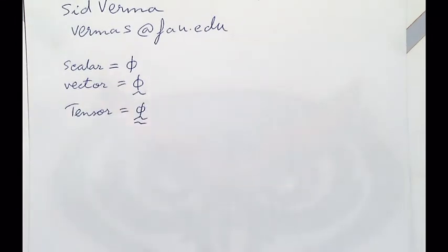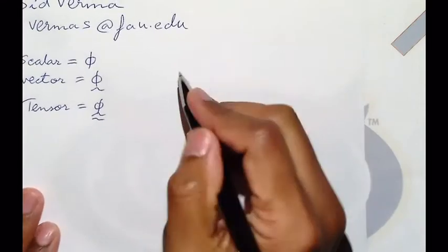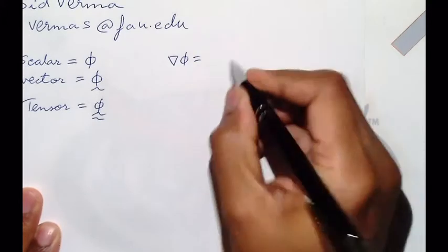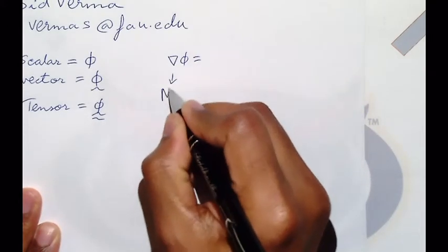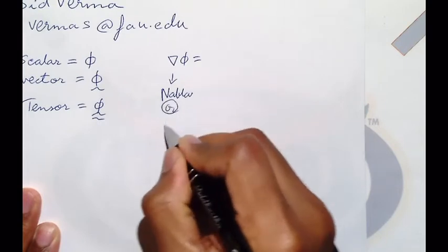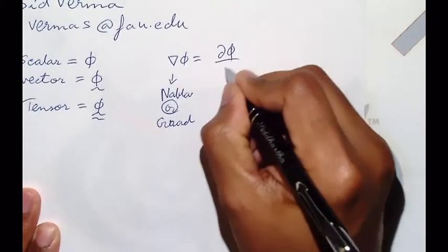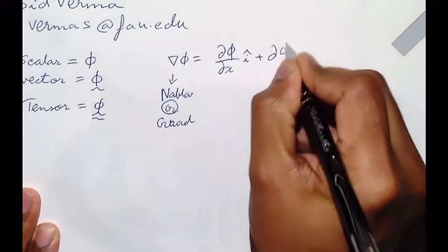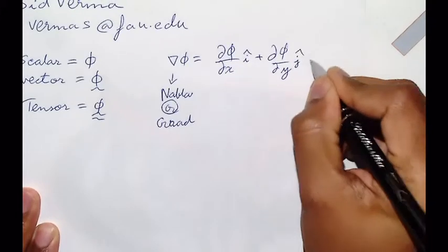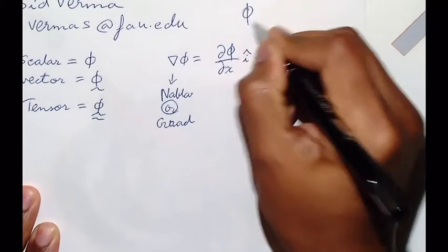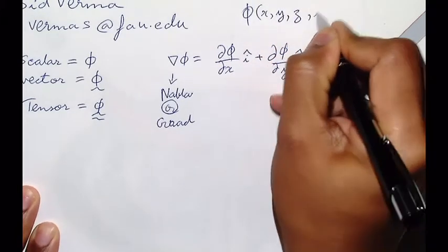Phi can be whatever — it can be velocity, or concentration, or anything you want. The nabla operator is also called the gradient operator. Nabla phi is just delta phi by delta x times i, plus delta phi by delta y times j, plus delta phi by delta z times k. And phi can be a function of x, y, z, and time — three dimensions in space. Another way you might write this is delta phi by delta x, delta phi by delta y. Another possibility is just phi comma x, phi comma y, phi comma z. Anytime you see a comma x, that means partial derivative with respect to x, y, or z.